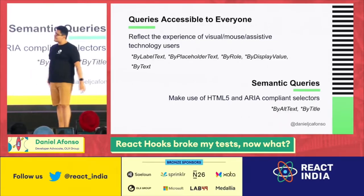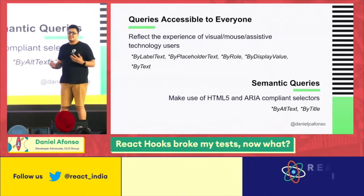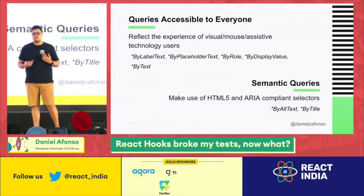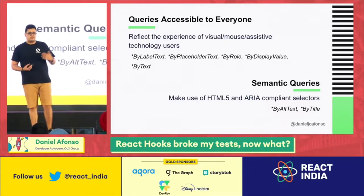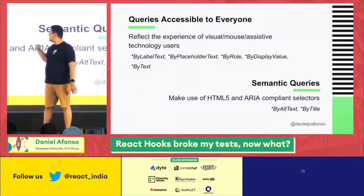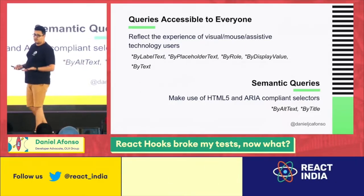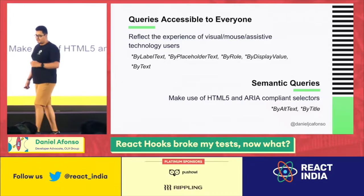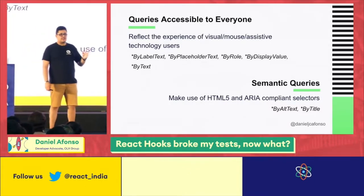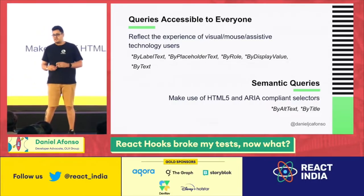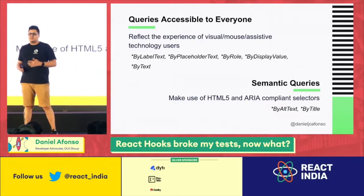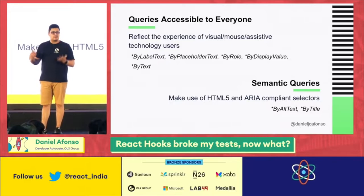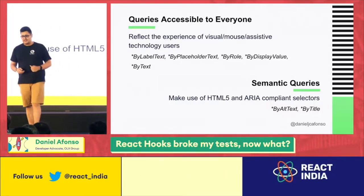Let's start with queries accessible to everyone. These are the queries that mostly reflect the experience of visual, mouse, and assistive technology users. How would you use this query? You get your variant and append it by label text, by placeholder text, by role, by display value, or by text. Then we have semantic queries, which should be your second option — these make use of HTML5 and ARIA compliance selectors but in certain cases don't fully respect accessibility. The queries in this family are byAltText and byTitle.